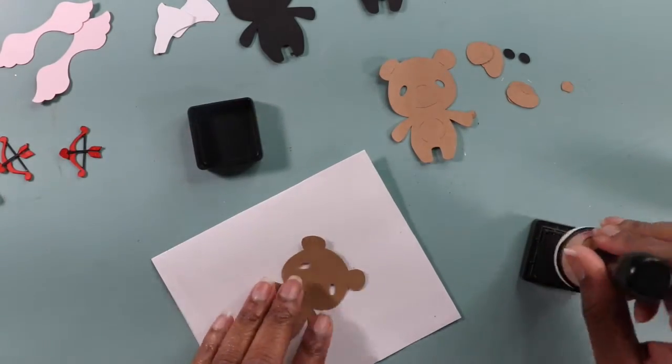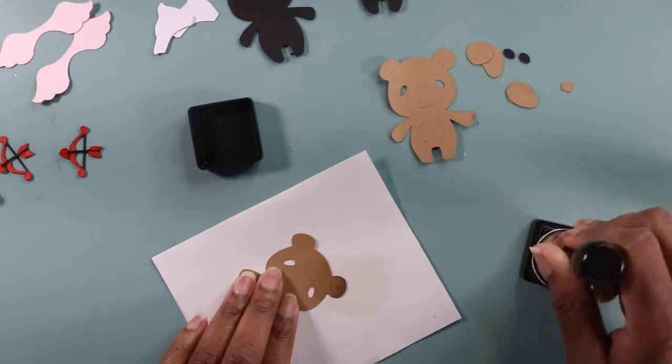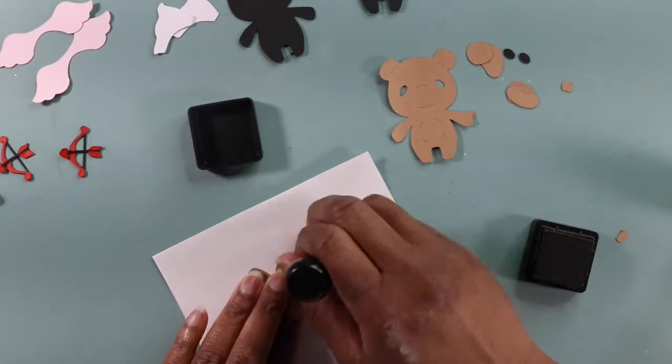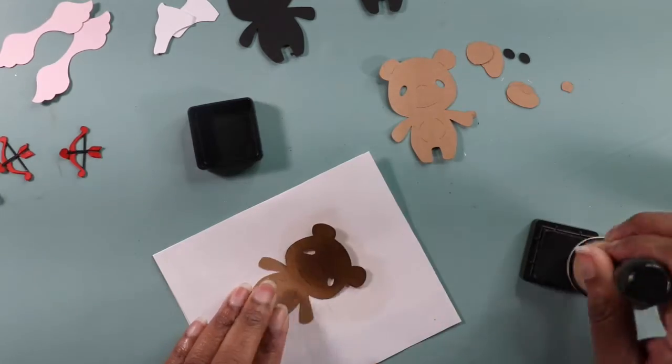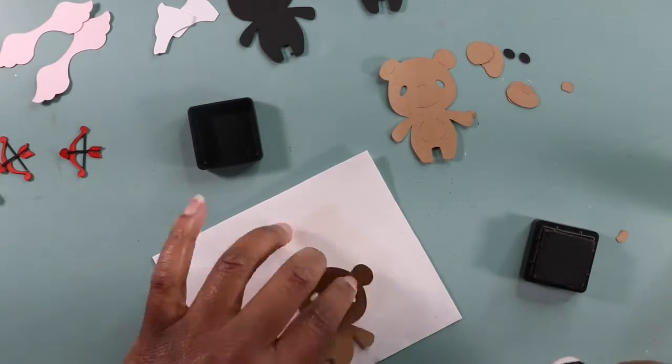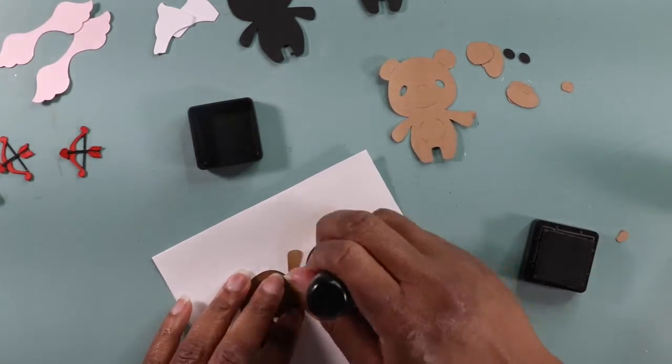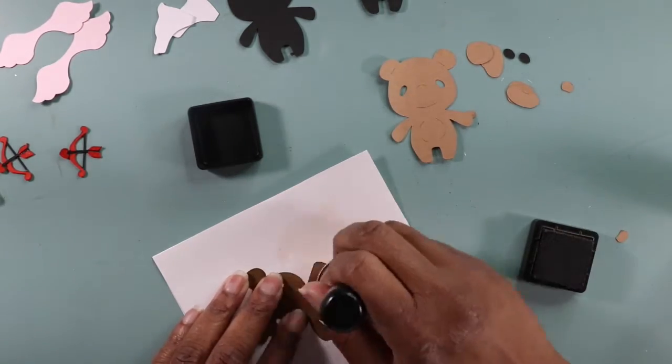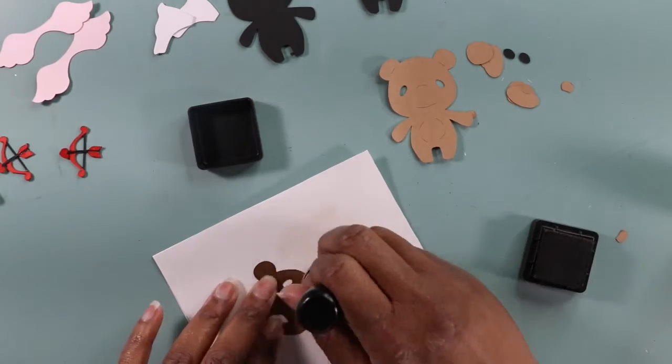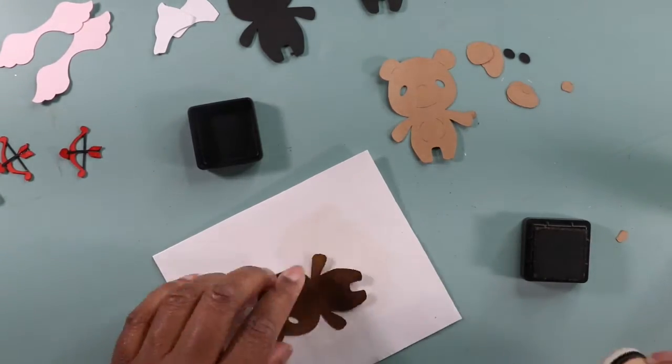So now I am adding some distress stain to my little teddy bear because I only had one color of brown paper and I wanted my teddy bear to have two tones. I wanted his outer shape to be a dark brown and I wanted like his muzzle and his little tummy to be a lighter brown so I am just going over this with some of the walnut distress ink.